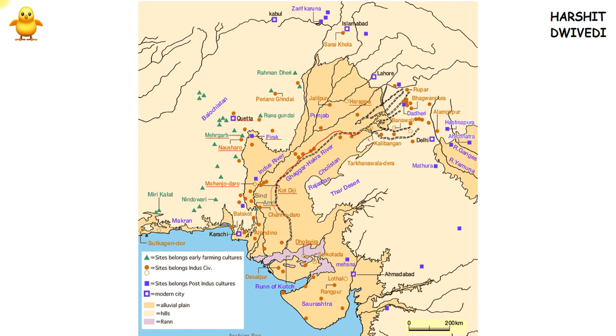The westernmost point of Indus Valley civilization is Sutkagendor in southern Balochistan — this is the western limit of the Indus Valley civilization.